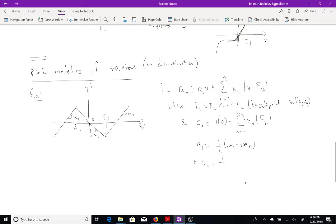And A0 is I of 0 minus sigma k going from 1 to n, B sub k, absolute value of E sub k, A1 is 1 half M0 plus Mn, and Bk is 1 half Mk minus Mk minus 1. Again, the labeling is as follows. Here is M0, M1, M2. So, you start from the left, go to the right.